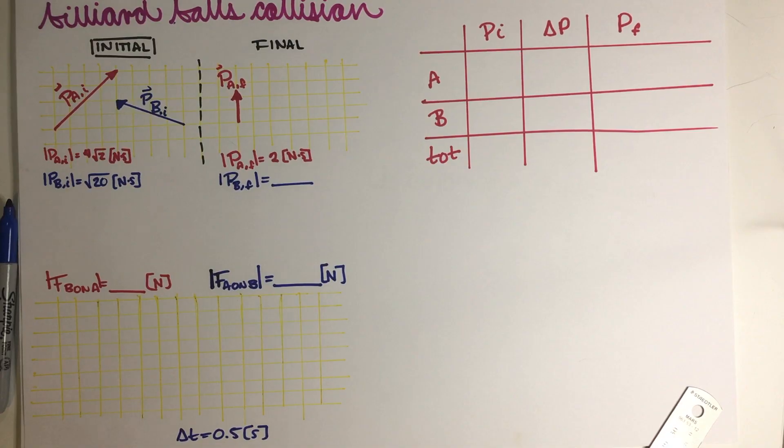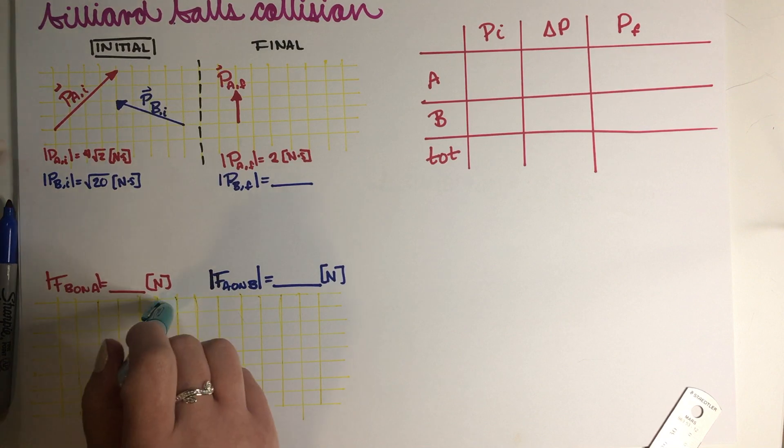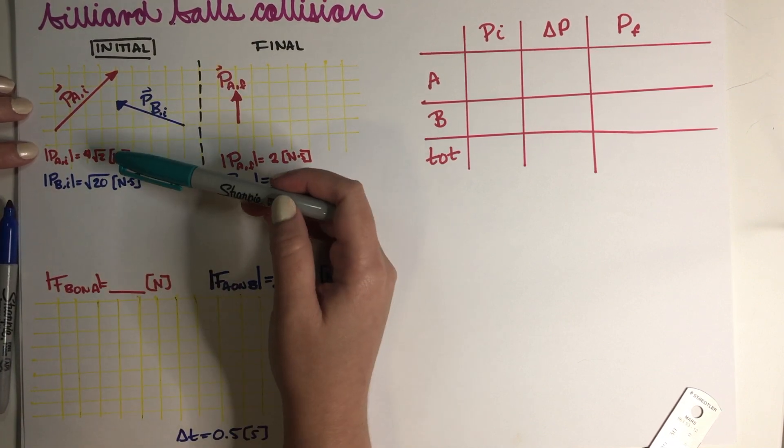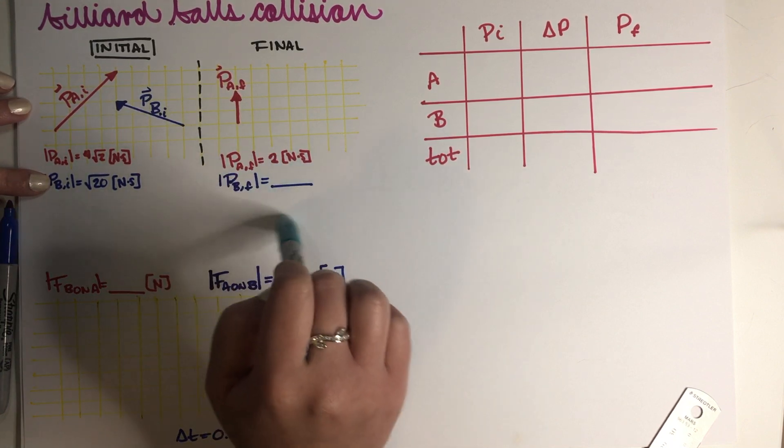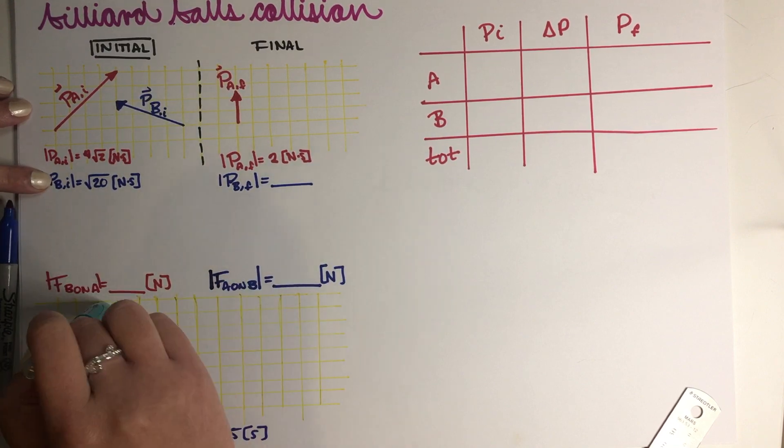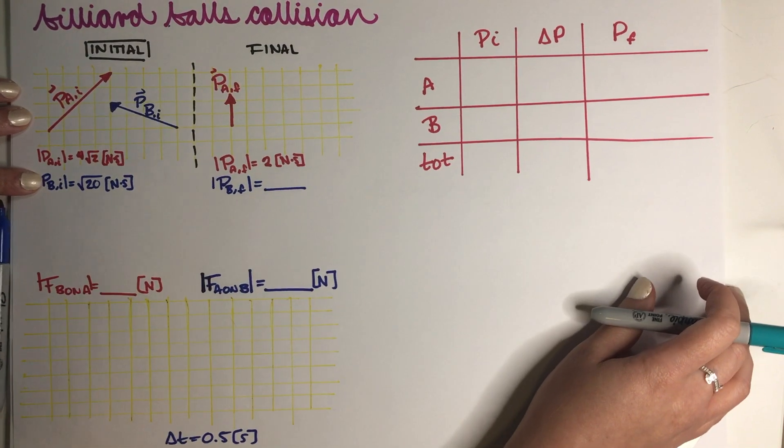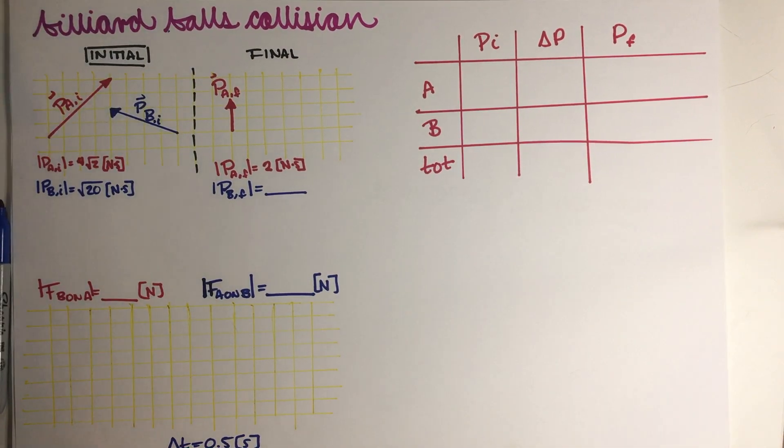So as you can see, I have everything written down here in my notes. So I have the drawing, and I even made a grid that looks exactly the same as the one in the problem. So we do have an initial momentum here, initial momentum here, we have one of the finals, and we do need to write here what this magnitude is, and then we also need to figure out what's going on with the forces.